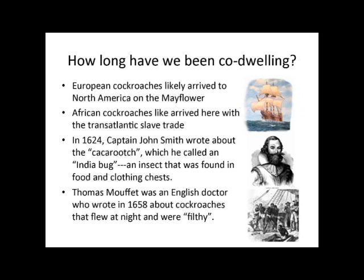There were species of cockroaches that came over with the first settlers. Periplaneta americana is actually not native to America — it's native to parts of Africa, and we believe it came over with the transatlantic slave trade. In one of our first European settlements, Captain John Smith wrote about the cockroach infesting food chests and clothing chests, and based on descriptions, we know that to probably be Periplaneta americana.